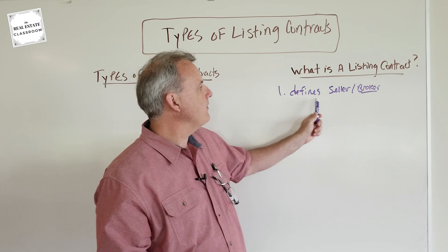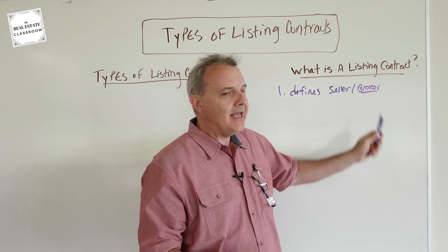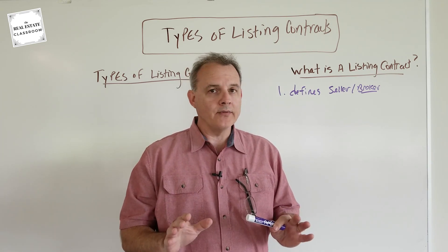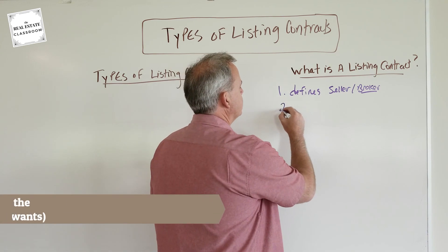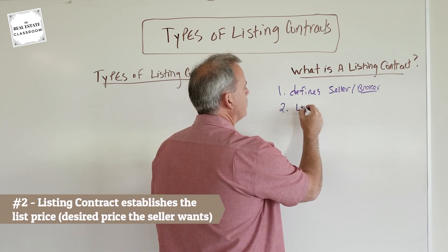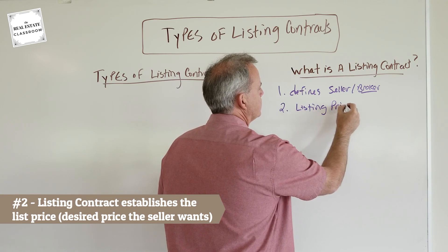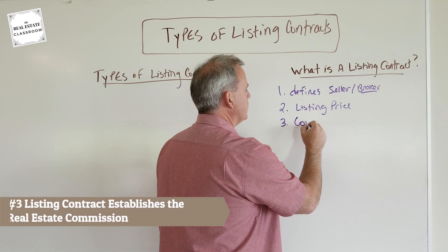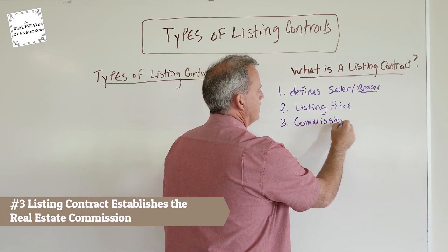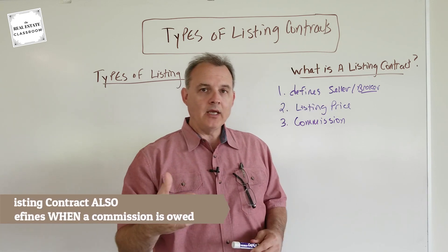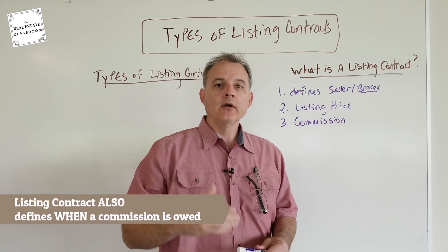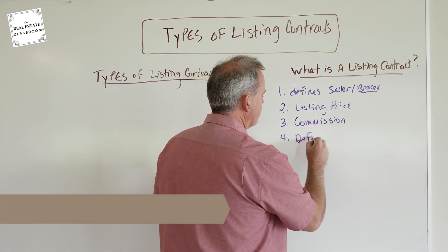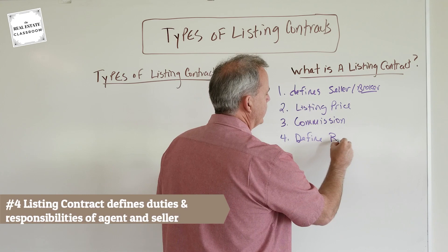The listing contract defines the relationship between the seller and the listing broker. The listing also does some other very important things. Number two, it establishes what the listing price is — how much is this property up for sale? Number three, it defines what the commission rate is going to be, the commission rate that the seller is going to pay the real estate broker for services.